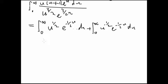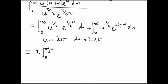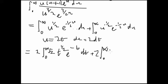The obvious substitution is u = 2t, so du = 2 dt. The first integral becomes 2√2 · t^(1/2) · e^(-t) dt. The second integral is also multiplied by 2, giving (1/√2) · t^(-1/2) · e^(-t) dt.